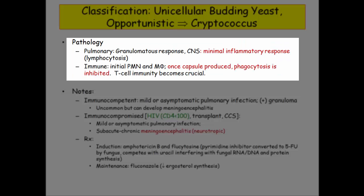The pathology reinforces what we already know. The capsule forces the immune system to wall off and contain the organism, and this process creates granulomas. However, if you are T-cell deficient, you can't create that granuloma, and subsequently you can't contain the organism — it disseminates.